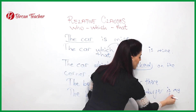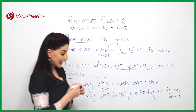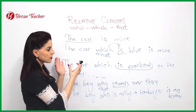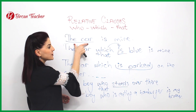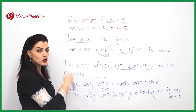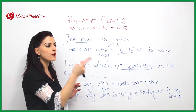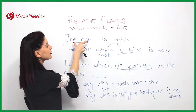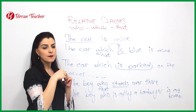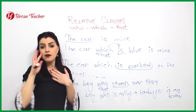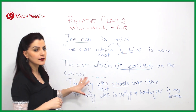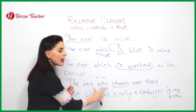'The boy who is eating a hamburger is my brother.' In English, in relative clauses, the main point is to define the object or the person. I am giving information so you can understand which boy I am talking about, or giving a special feature about an object so you understand which car belongs to me. The object and the person are defined with the help of relative pronouns.